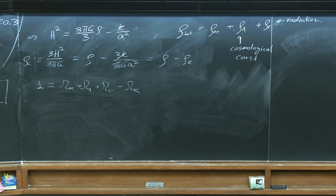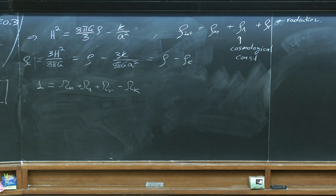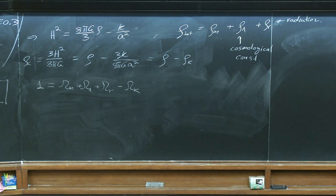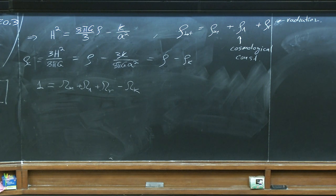CMB alone doesn't put a very strong constraint on the relation between omega_lambda and omega_m because there is a degeneracy. In two words: non-vanishing omega_k distorts the path of light geodesics, changes the angular diameter distance, making objects of known size seem closer or farther. CMB gives us objects of known size — structures in the CMB anisotropies — so the inferred distance for known-size perturbations would be modified by omega_k. The degeneracy is broken by getting another standard ruler at a different distance, provided by measurements of clustering of galaxies — the BAO.